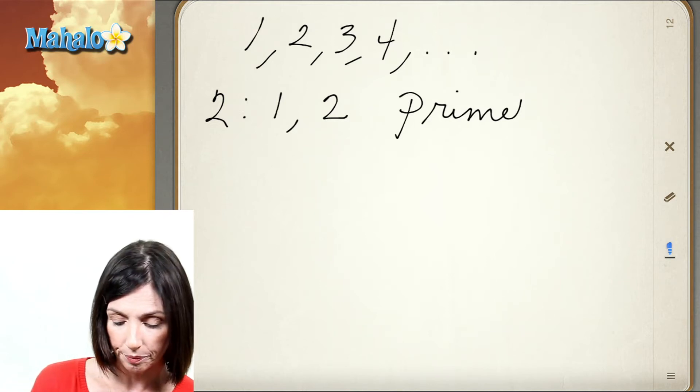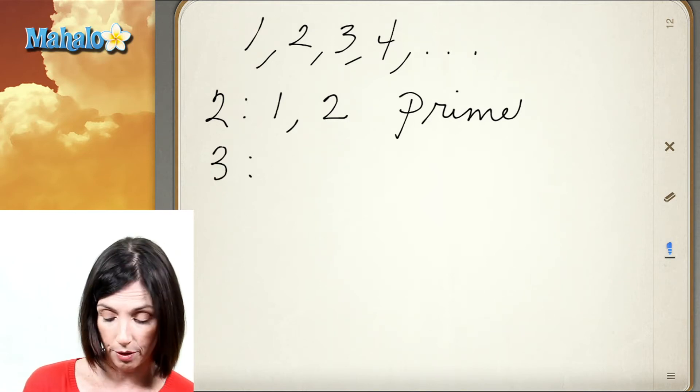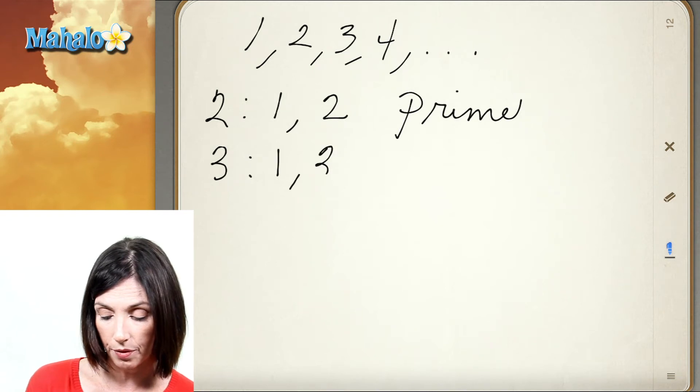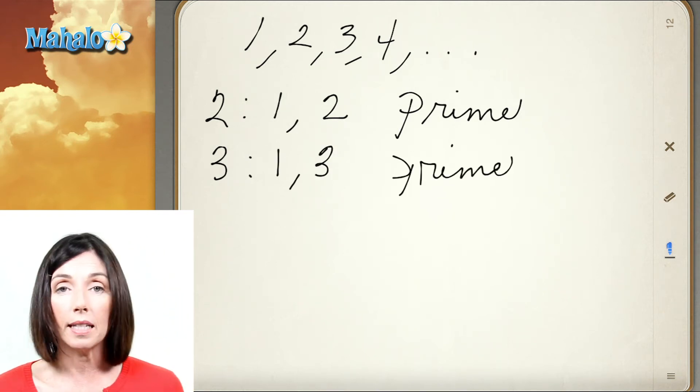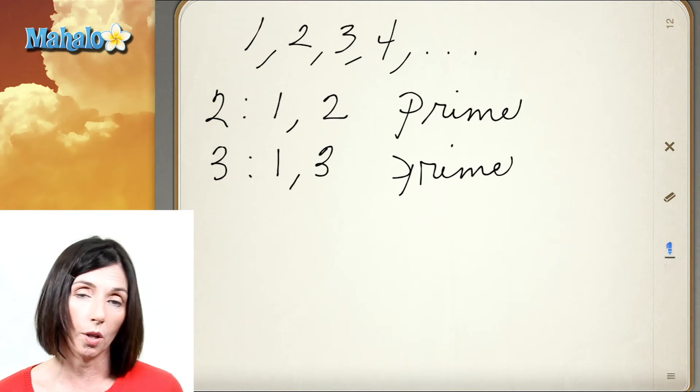What about 3? 3 has only two factors, 1 and 3 itself, so that means 3 is a prime number. 4 is even, and we know 2 is a factor of 4, so it's composite.